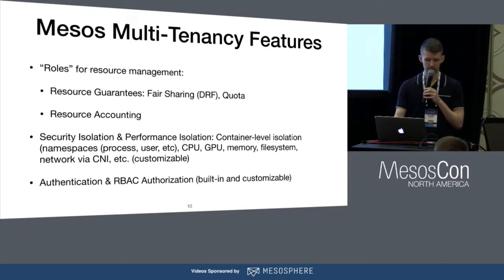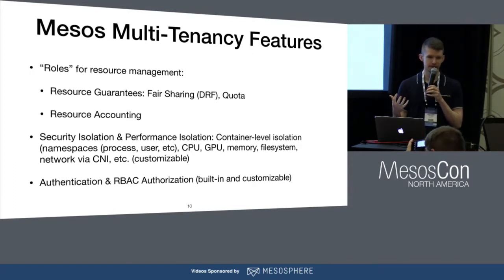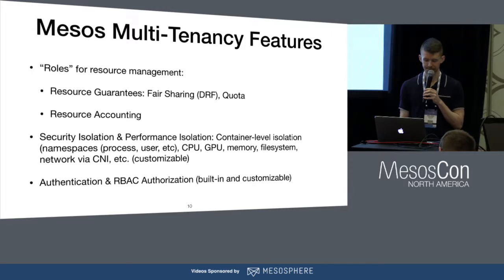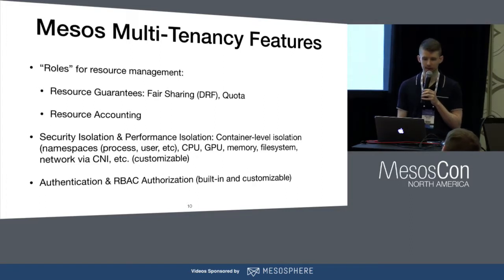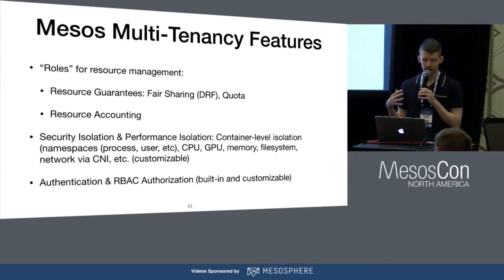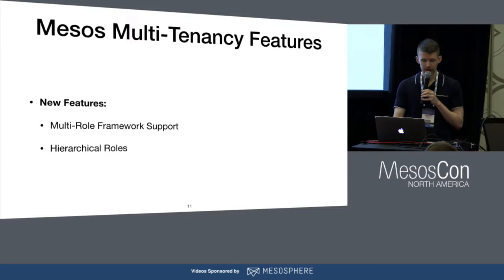What features exist today? We have roles with resource guarantees. There are two things in place: fair sharing with DRF, and quota. Quota gives you an absolute guaranteed amount and fair sharing is relative. We have resource accounting to track how much each role is using. We also have a lot of security isolation and performance isolation — if you want to learn more, attend a containerization-related talk. And we have authentication and built-in authorization, which is customizable — for example, you could build an integration to a Kerberos system. Jay is going to highlight two features for multi-tenancy that we recently worked on.